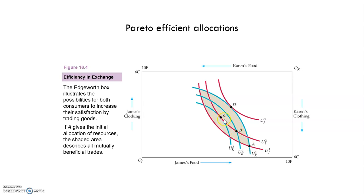Points B or C will provide them a better situation. If we compare C and D, Karen prefers point C but James would prefer D. So at the end, in which point will they situate? We will see it afterwards.